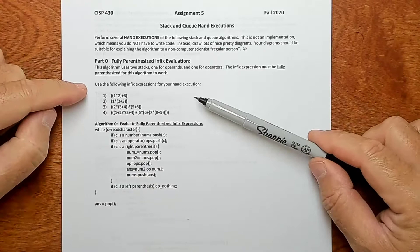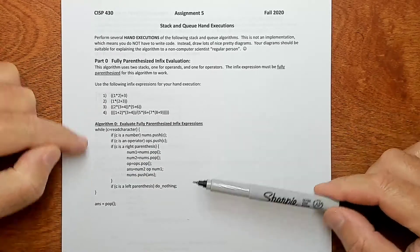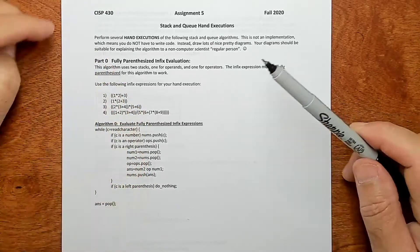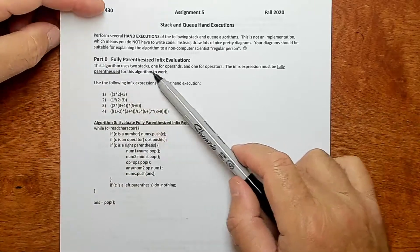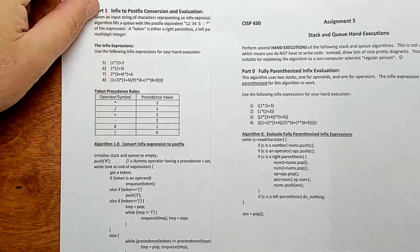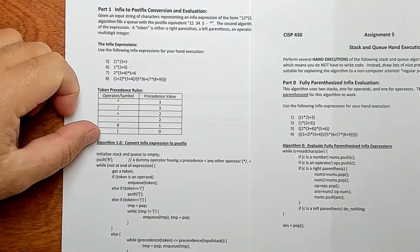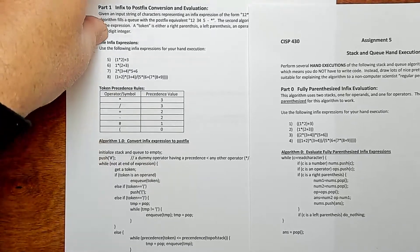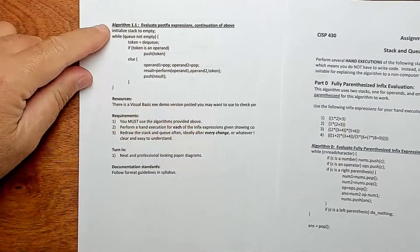But basically what I want you to do is perform some hand executions on three separate algorithms. There's part 0 which has this guy here, and then there's part 1 which has two algorithms in it - Algorithm 1.0 and algorithm 2.0, I guess like algorithm 1.1.